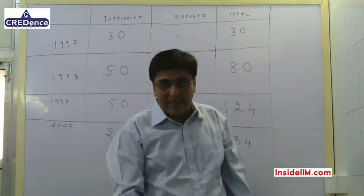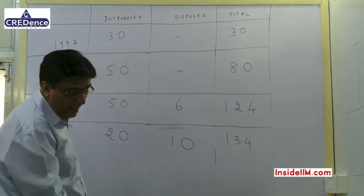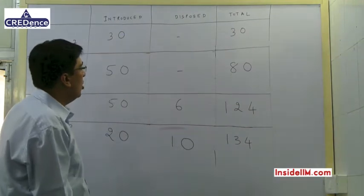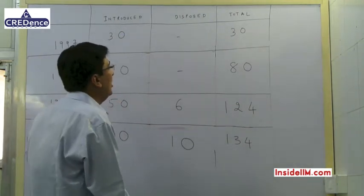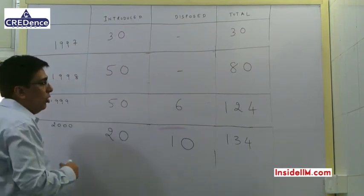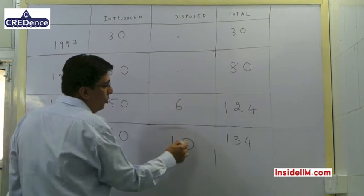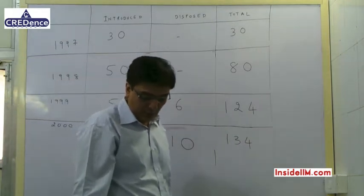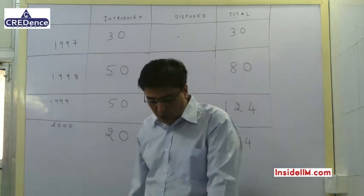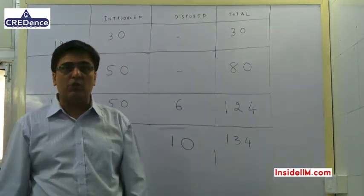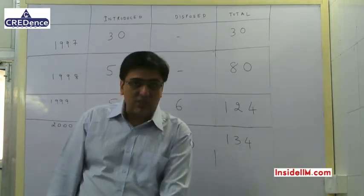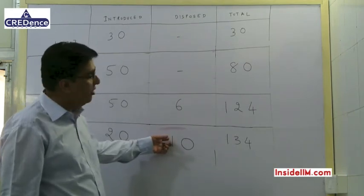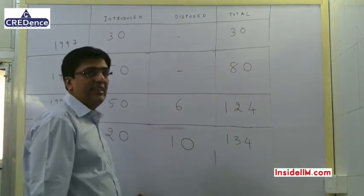How many Naya Mixture Grinders were disposed of by the end of 2000? By the end of 2000, the Mixture Grinders disposed of will be 20% of those introduced by then — that is 6 plus 10, a total of 16. Hence the answer to question 1 is option 2: 16 Mixture Grinders were disposed of. A very common mistake is that students forget to read the word 'by' — they would get only 10 — but the total is 6 plus 10, which is 16.